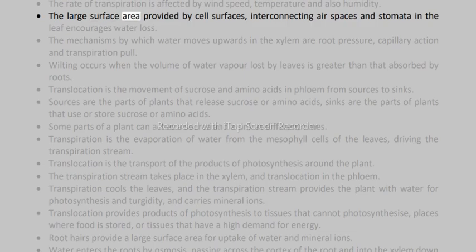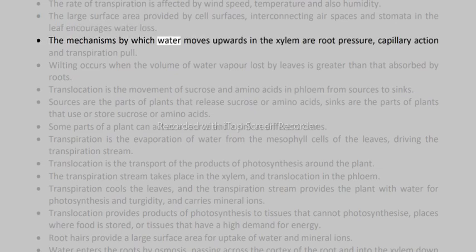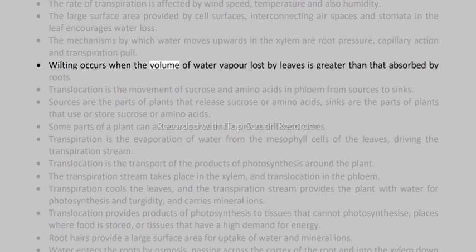The large surface area provided by cell surfaces, interconnecting air spaces, and stomata in the leaf encourages water loss. The mechanisms by which water moves upwards in the xylem are root pressure, capillary action, and transpiration pull. Wilting occurs when the volume of water vapor lost by leaves is greater than that absorbed by roots.